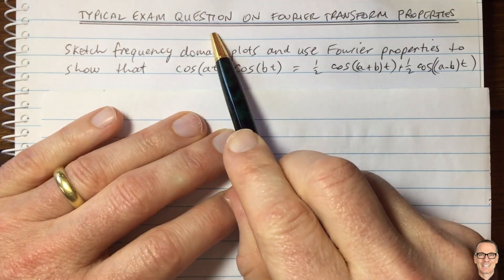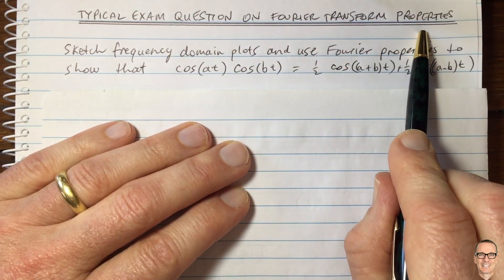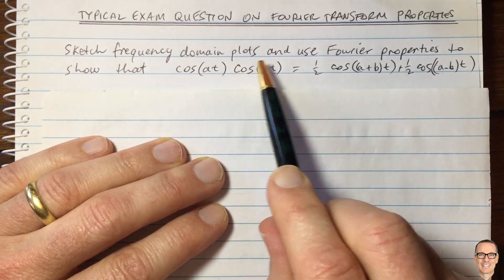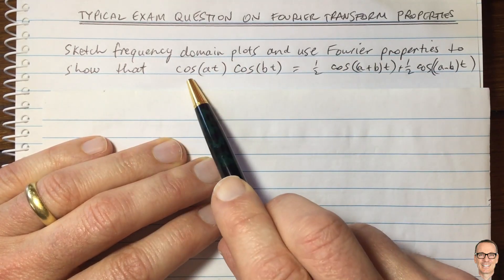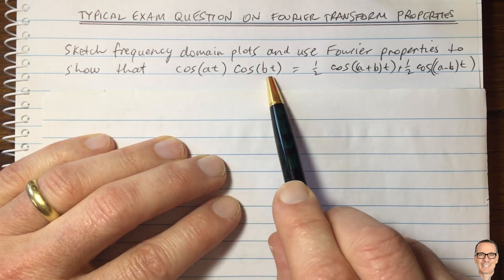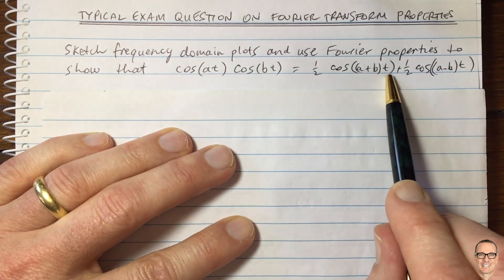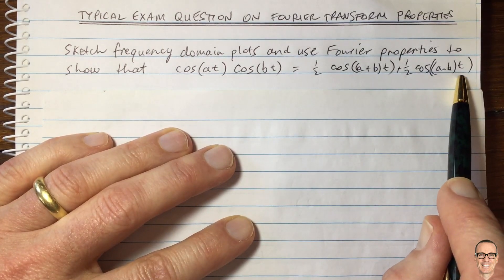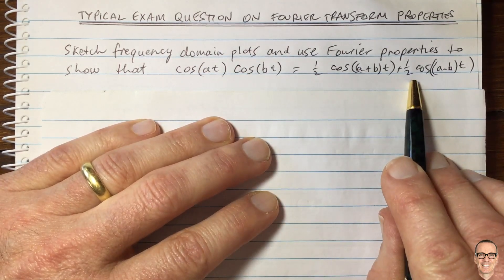Here's a typical exam question on Fourier transform properties. It says: sketch frequency domain plots and use Fourier properties to show that cos(at)·cos(bt) = ½cos(a+b)t + ½cos(a-b)t. This is a common expression which can be shown in a number of ways.